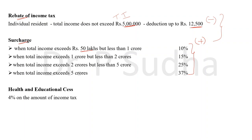The next is health and education cess. This is a compulsory addition on the tax amount, calculated at 4%.